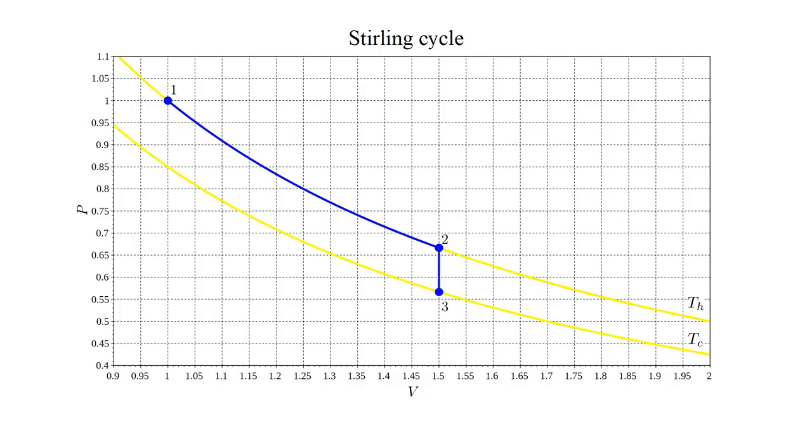In the second leg of the cycle, the gas is cooled, the pressure drops accordingly, and we move to the second isothermal curve at temperature T cold. This takes the system from state 2 to state 3.